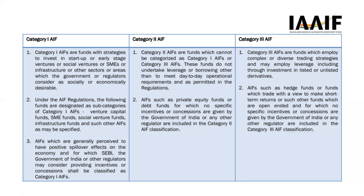Category two funds do not undertake any borrowing or leverage, and examples are private equity funds and private equity debt funds. Category three funds use complex trading strategies — examples are hedge funds, which trade with a view to make short-term returns. There is no specific incentive or concession from the government for category two or category three AIF. Incentives and concessions apply only to category one AIF, of which venture capital fund is an example.